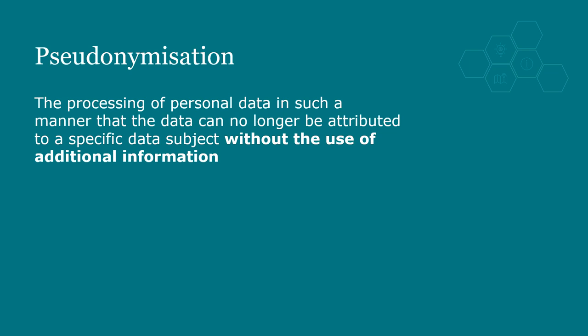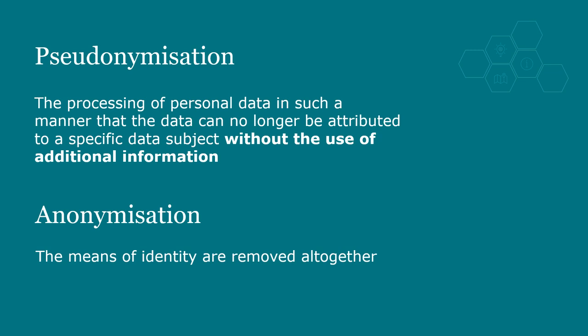The next definition we will think about is pseudonymisation. This is a key measure in the UK GDPR which can be used to ensure security of processing. The definition of pseudonymisation is the processing of personal data in such a manner that the data can no longer be attributed to a specific data subject without the use of additional information. This contrasts with anonymisation, which is where the means of identity are removed altogether. For example, I may be referred to as patient 51 in a hospital document, but the hospital is able to look up patient 51 and identify that it is me — for the purposes of that document, I have been pseudonymised. But if the hospital has no way of telling who patient 51 is, then the data has been anonymised. Note that pseudonymisation is largely a security measure and that pseudonymised data remains personal data.